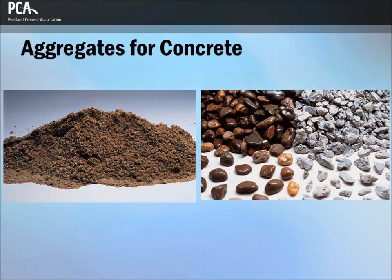Fine aggregates generally consist of natural sand or crushed stone, with most particles smaller than 5 mm, or 0.2 inches. Coarse aggregates typically consist of gravels, crushed stone, or a combination of both, with particles predominantly larger than 5 mm, or 0.2 inches, and generally between 3/8 inch and 1½ inch.